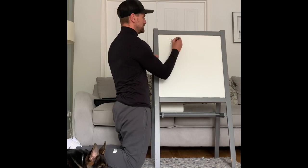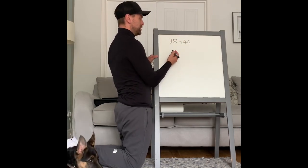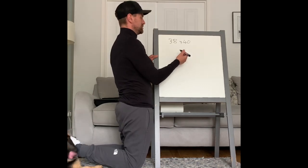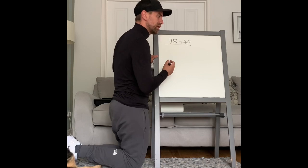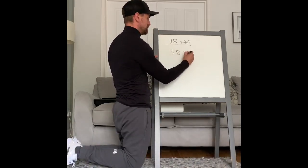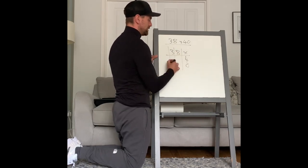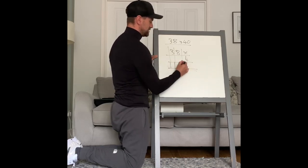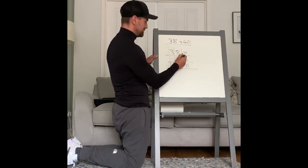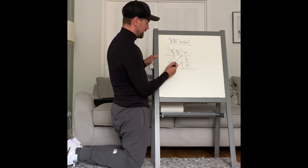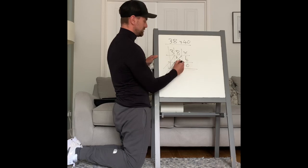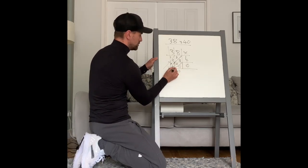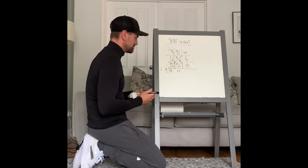38 times 40. You can do this using common sense: 38 times 10 is 380, then times that by 4. Using our tried and tested grid method, put the diagonals in: 8 times 4 is 32, 8 times 0 is 0, 3 times 4 is 12, 3 times 0 is 0. So I've got a 0, a 2, a 5, and a 1 along the diagonals. Answer: 1,520.